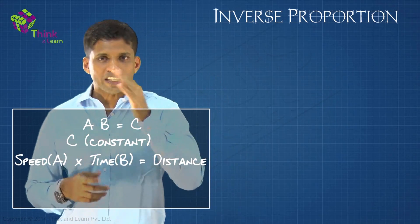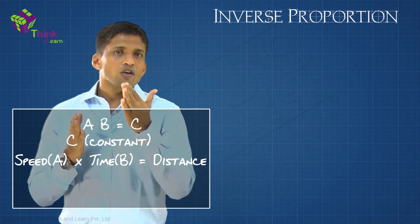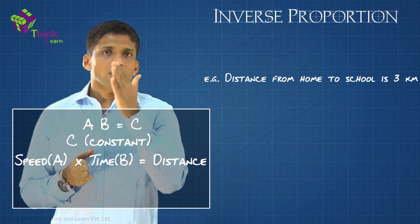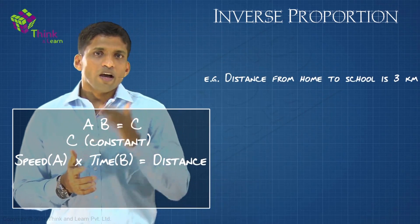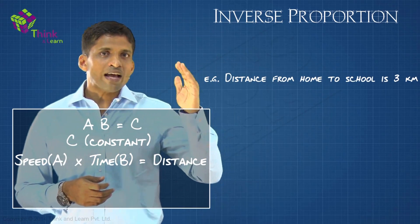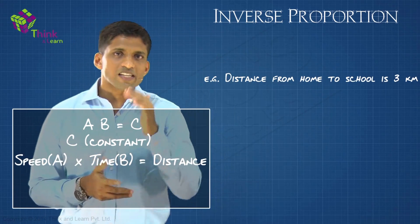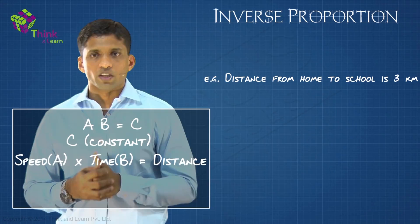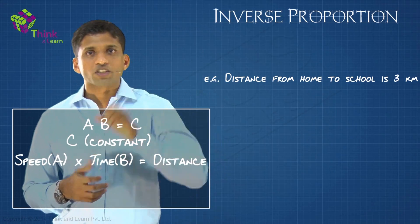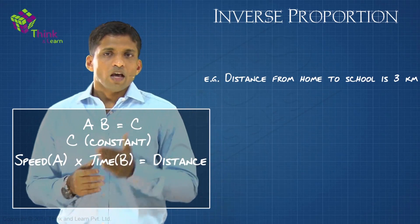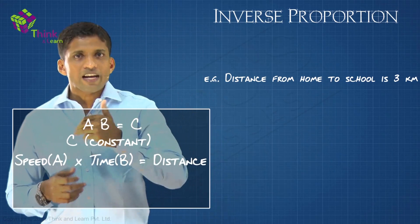If I keep the distance at 3 kilometers, let's assume that distance from home to school is 3 kilometers. That is, distance is fixed, right? It's not changing.